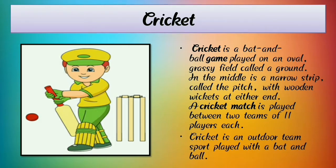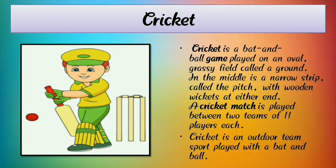Cricket is a bat and ball game played on an oval grassy field called a ground. In the middle is a narrow strip called a pitch, with a wooden wicket at either end. A cricket match is played between two teams of 11 players. Cricket is an outdoor team sport played with a bat and ball.